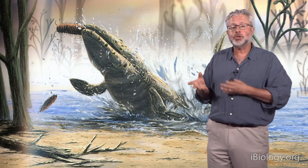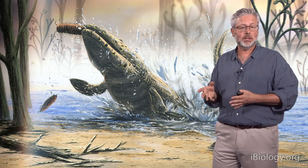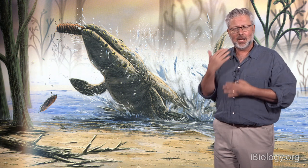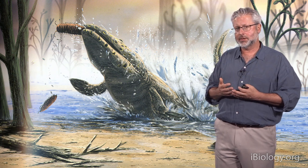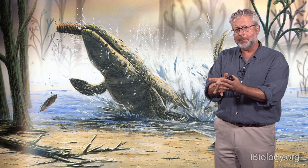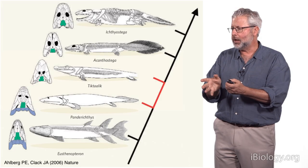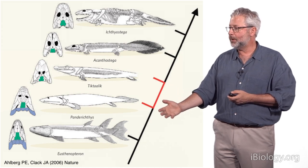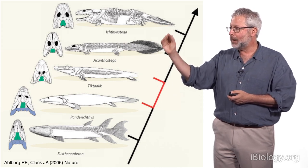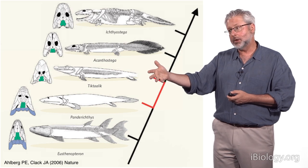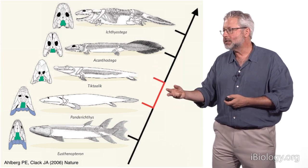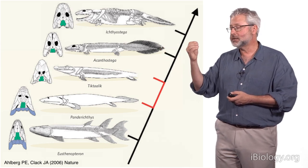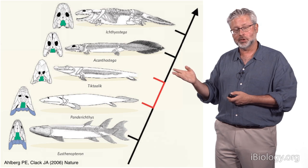What we have with this creature, Tiktaalik rosea, is an animal that has lungs and gills, fins with components of limbs inside, and a neck — a real mix of characteristics. When we map this in the phylogenetic tree, it holds a relatively special place: fish on the bottom, limbed animals on top, and Tiktaalik sits right in the middle. It shows us the sequence of the acquisition of tetrapod characteristics — whether it's necks, fingers, wrists, toes, and so forth.